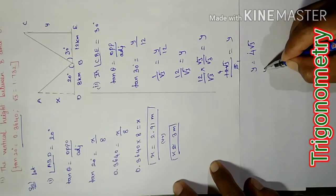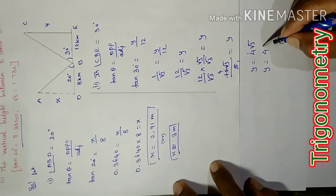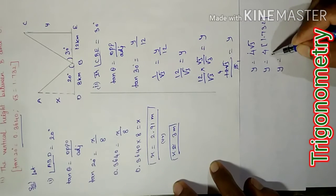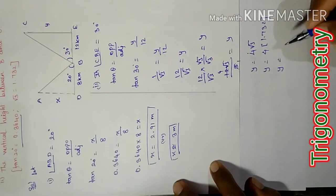4 root 3 value equal to 1.732. Therefore 4 into 1.732 equal to 6.93 kilometers.